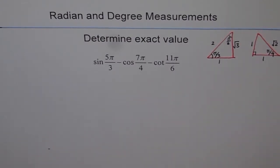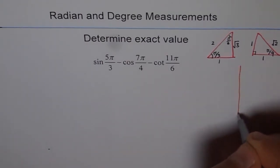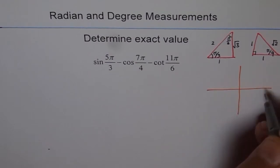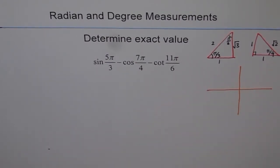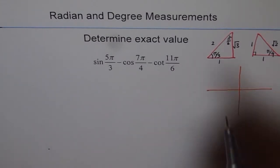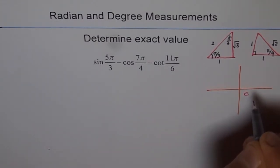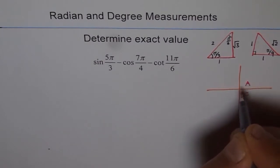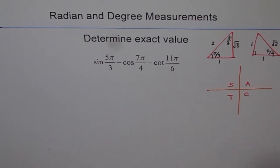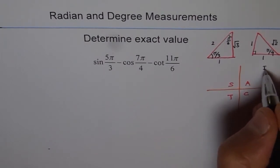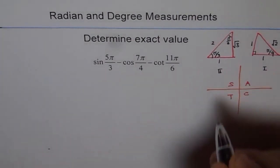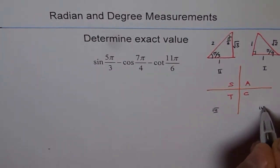Second thing which we need is a coordinate plane to figure out where these angles are and what their sign will be. Remember the CAST rule: C, A, S, T. The CAST rule and quadrants you should remember: 1, 2, 3, and 4.